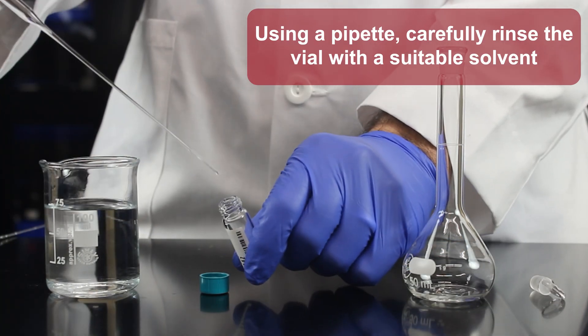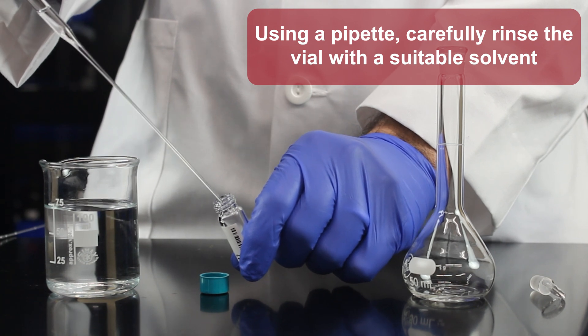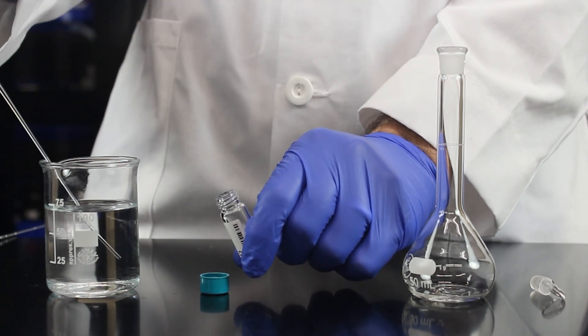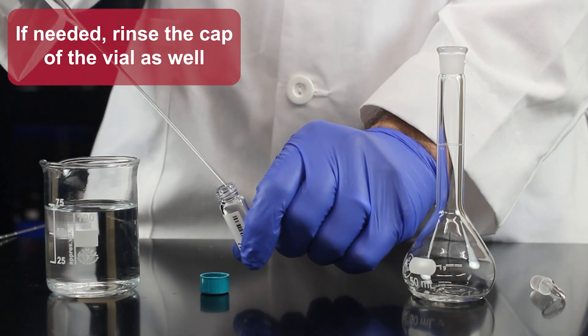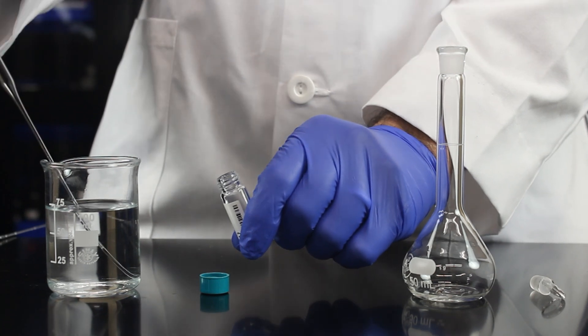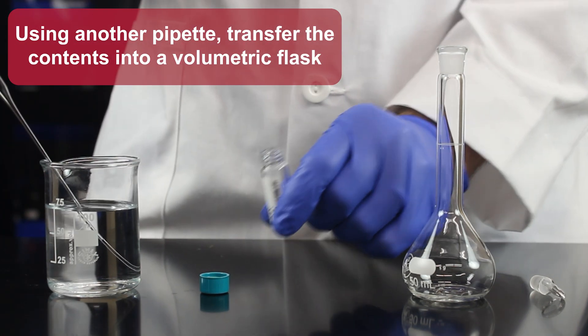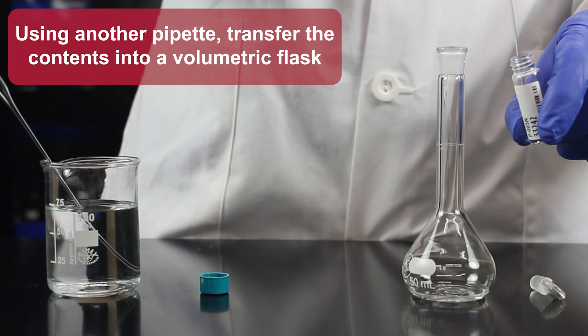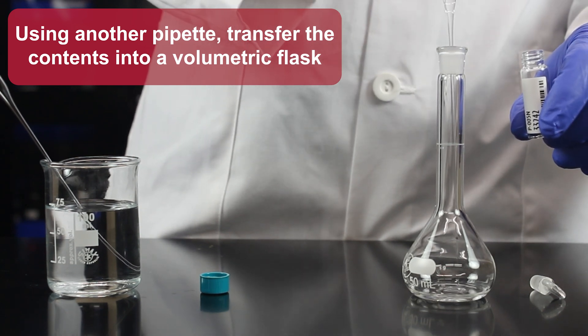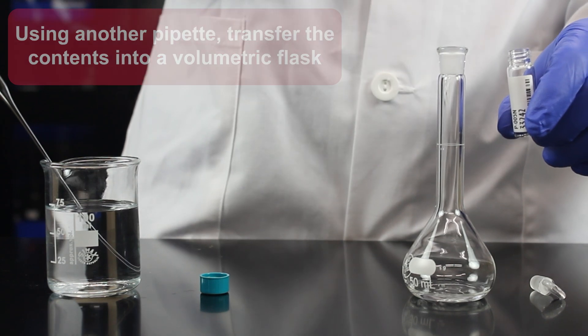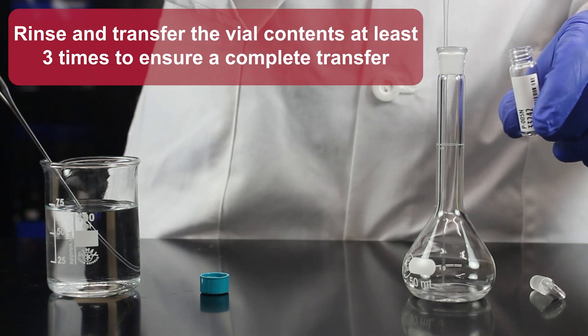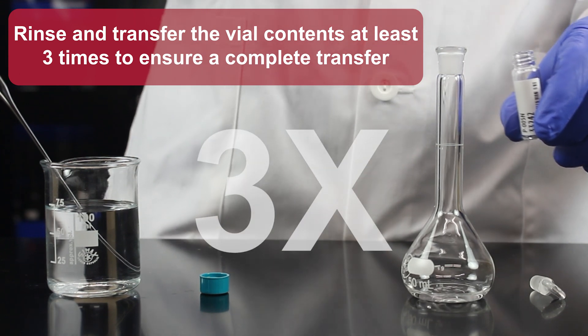Using a pipette, carefully rinse the vial with a suitable solvent. If needed, rinse the cap of the vial as well. Using another pipette, transfer the contents into a volumetric flask. Rinse and transfer the vial contents at least three times to ensure a complete transfer.